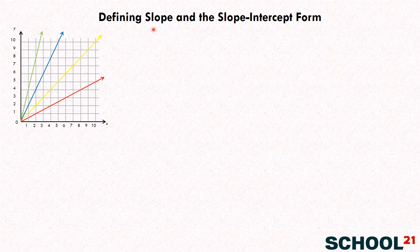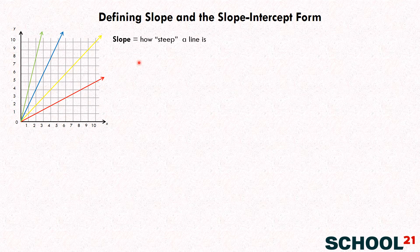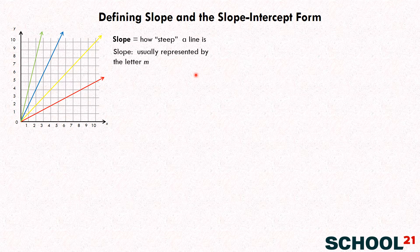So slope, this is one of the most important concepts in all of math. We're really going to try to get a good handle on it in the next few minutes. Let's look at these lines and start thinking about what slope is. Slope is how steep a line is and it's usually represented by the letter M.